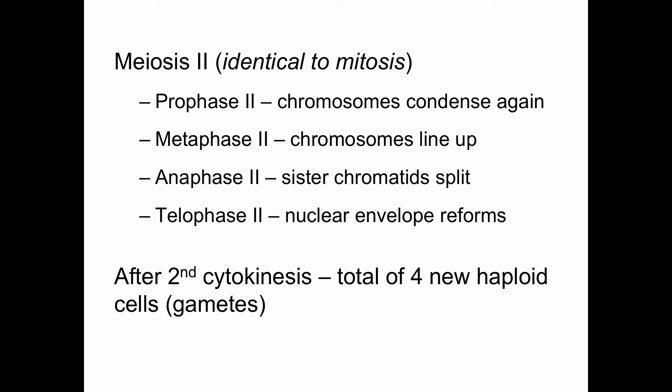In meiosis two, the chromosomes condense again and line up down the middle — single file this time, because the pairs have already separated. In anaphase two, the sister chromatids split. This looks exactly like mitosis, except at the end you have half the number of chromosomes because we're making gametes. A gamete is a sperm or an egg. The whole purpose is for sperm to fertilize the egg, and when that happens they pool their genetic information. They need to have only half the chromosomes so that the resulting cell has a complete set.